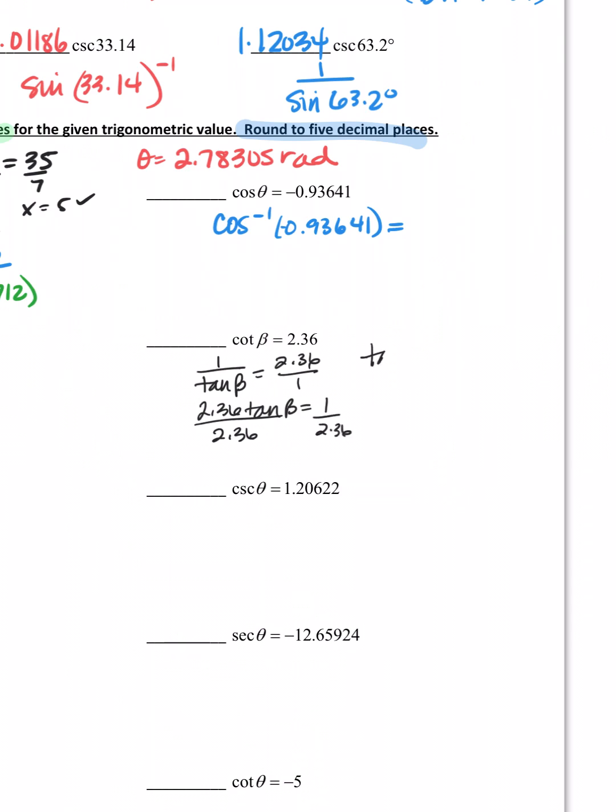Now we're just basically at the reciprocal of what we just did. Now I can do inverse tangent to get this. So beta would be the inverse tangent of 1 over 2.36. This is what I'm going to be putting in my calculator. This is what it's going to look like. Because it's the reciprocal, you just do that. You don't have to do all these steps, but you do need to show work on these.